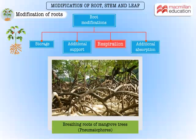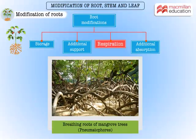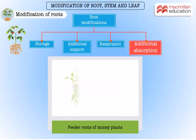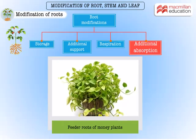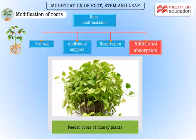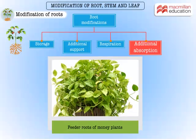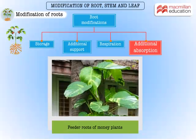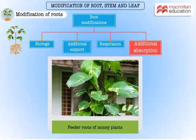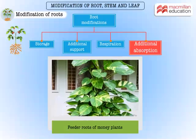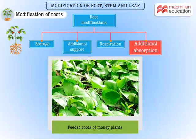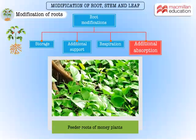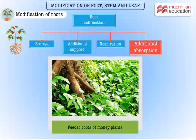These roots are called pneumatophores, or breathing roots. Money plant has long slender feeder roots that help in absorbing additional nutrients and water from the soil. Observe the feeder roots of money plant on a tree bark. Feeder roots make money plant a monstrously growing plant in tropical countries.